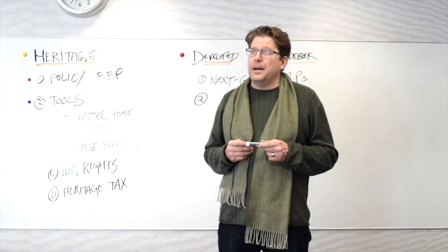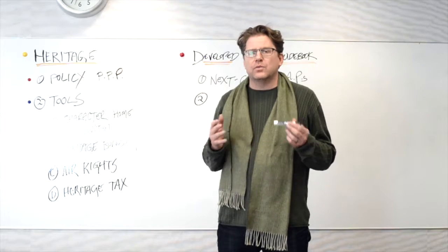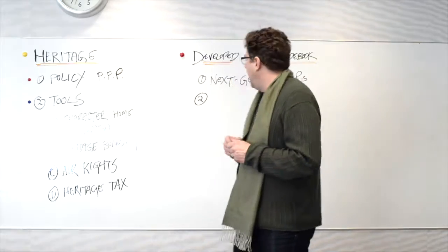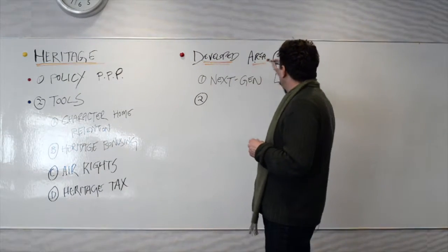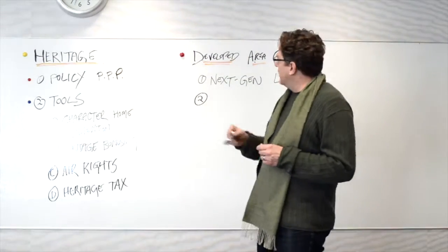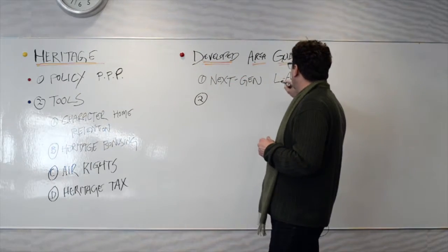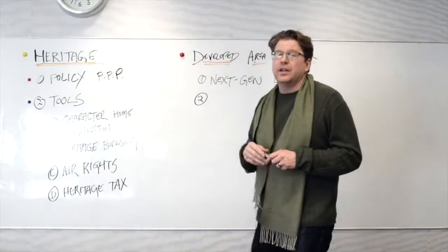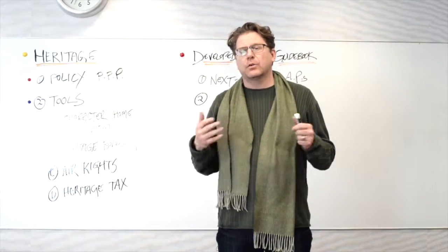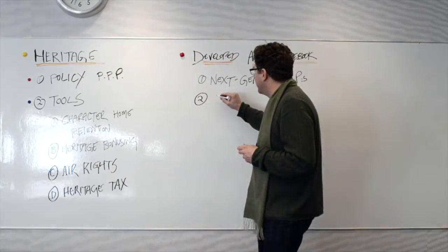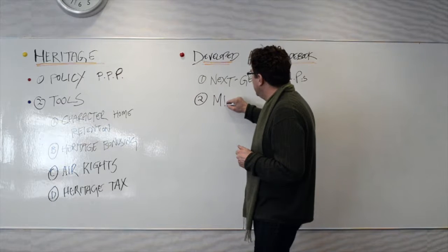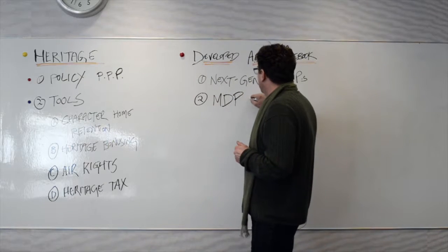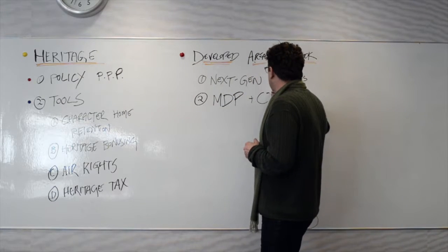And in developing the Developed Area Guidebook, Council was very clear that we said, you're not just going to build local area plans from this thing, but you're also going to build the next redux, the refresh, of the Municipal Development Plan, the MDP, and the CTP, which is the Calgary Transportation Plan.